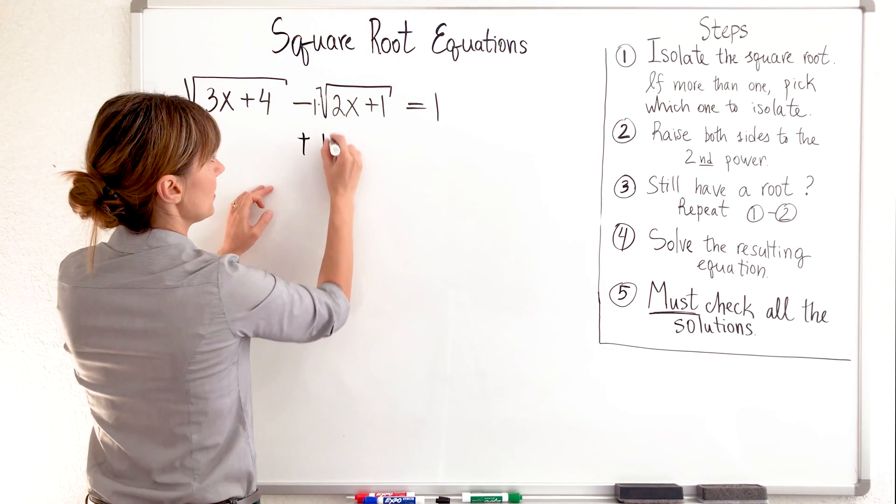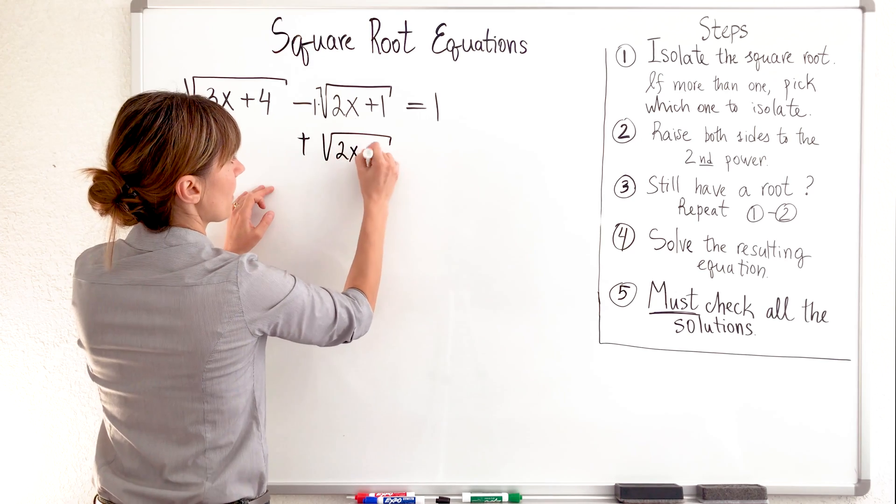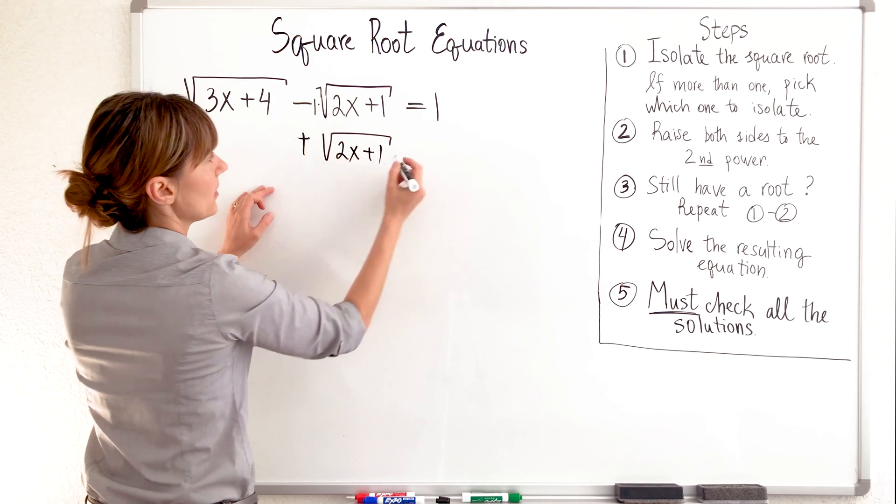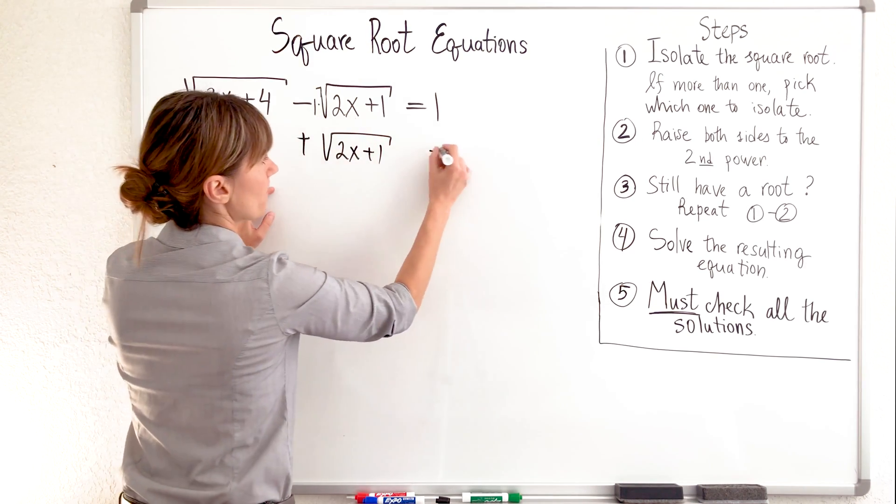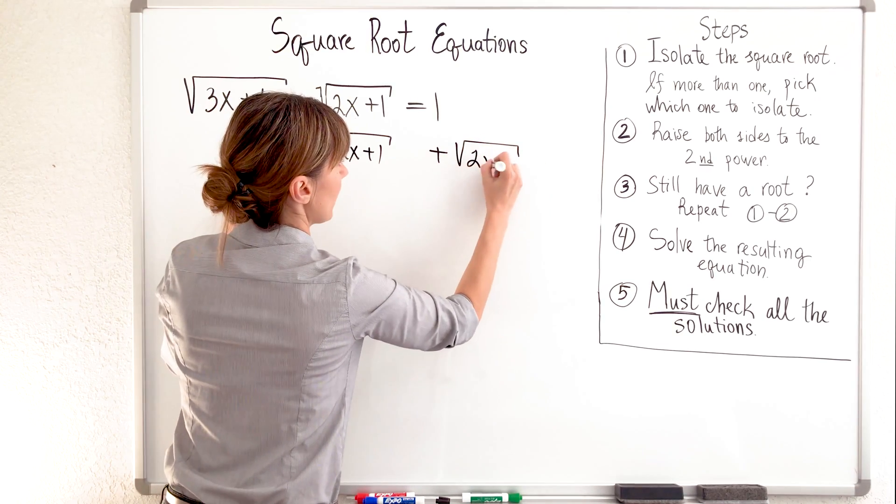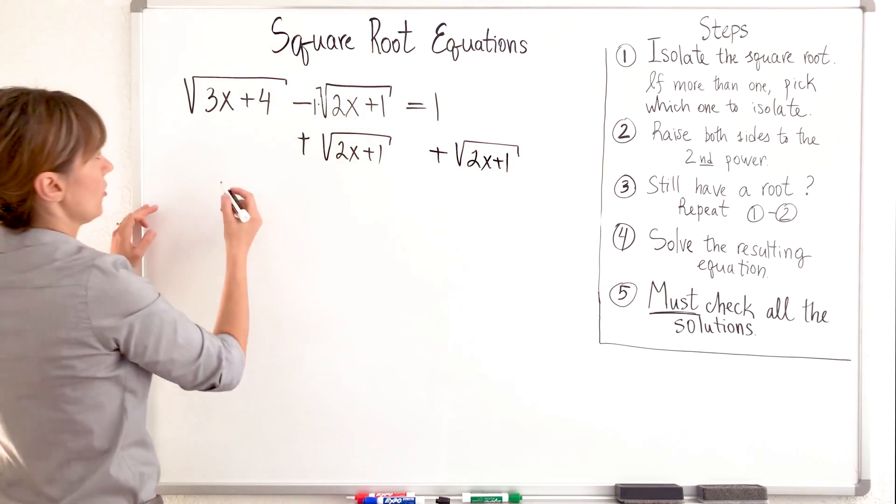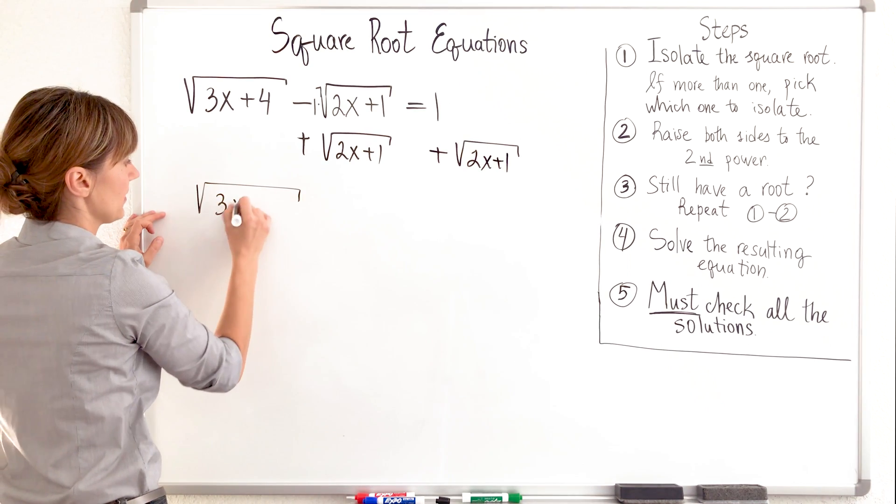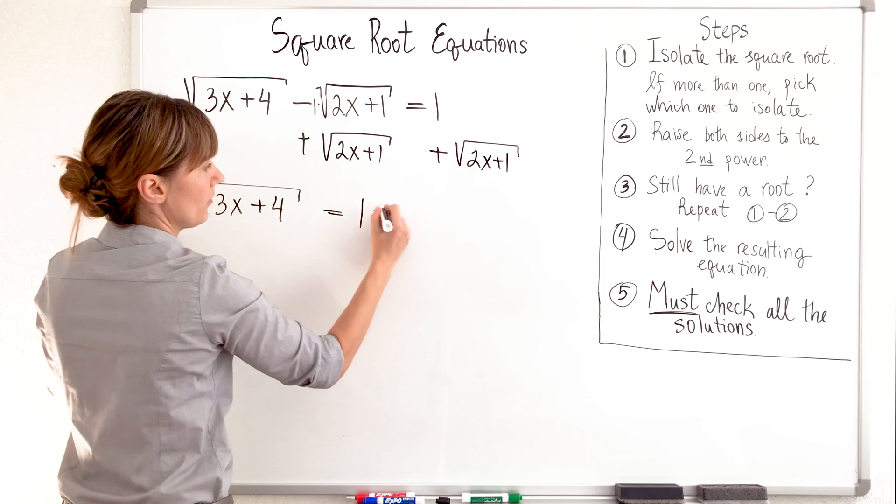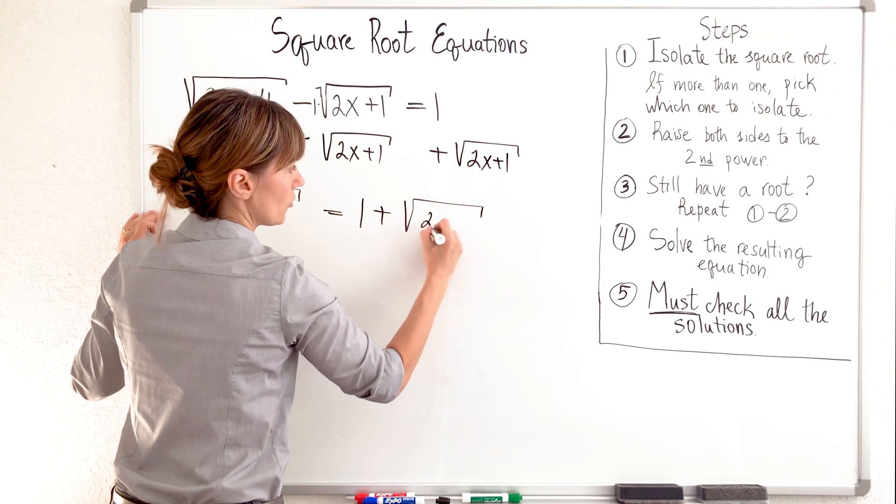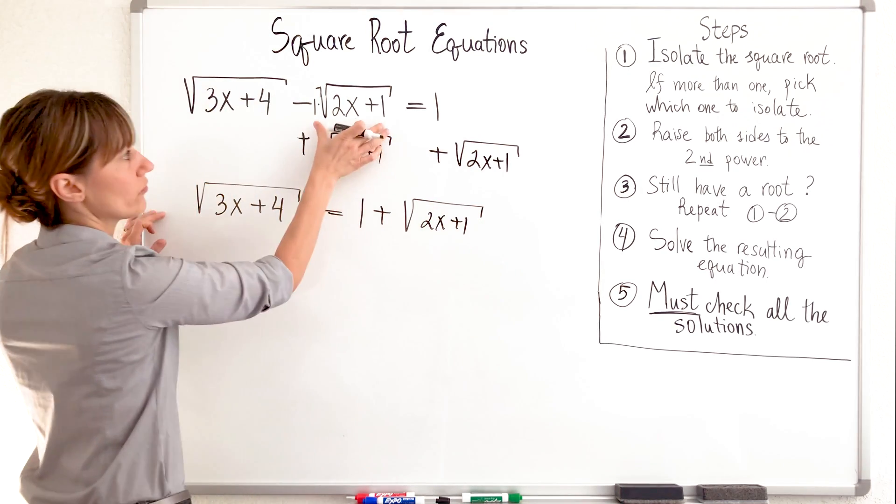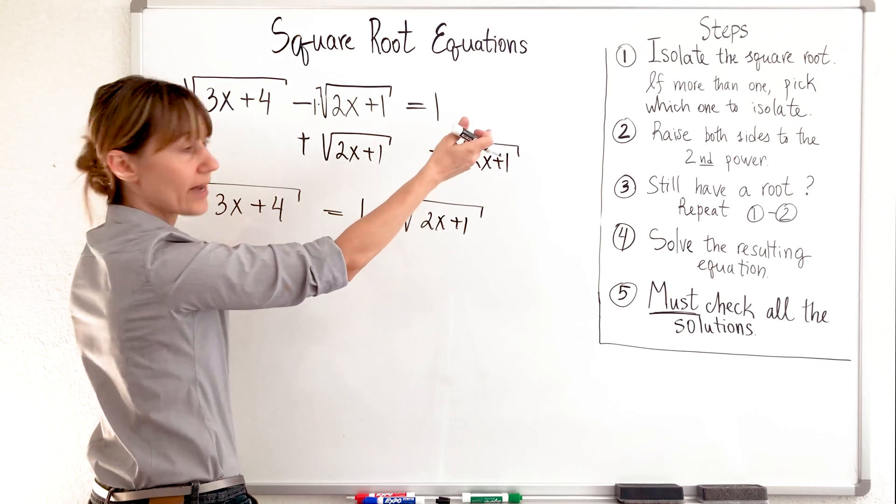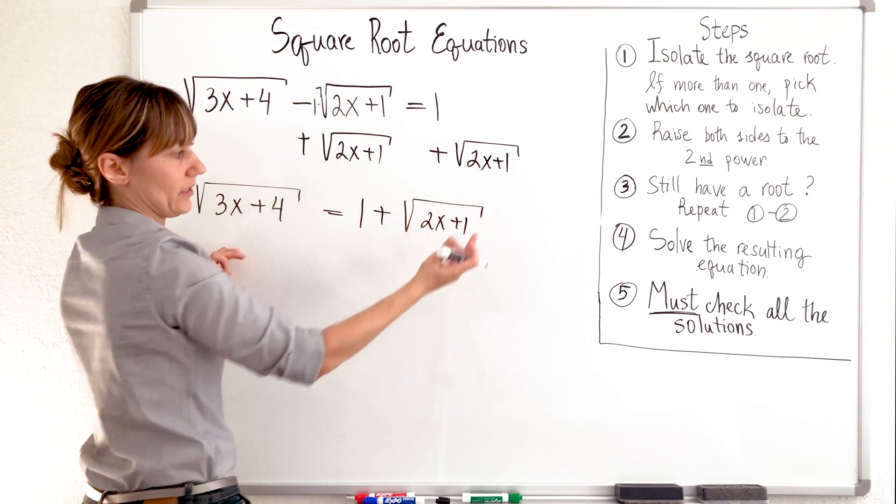You see, because I have like negative one here or negative square root, I'm going to add to both sides. So this will collapse to zero. I have 3x plus 4 equals 1 plus root of 2x plus 1. You see, I move this root to the other side with the opposite sign, basically.